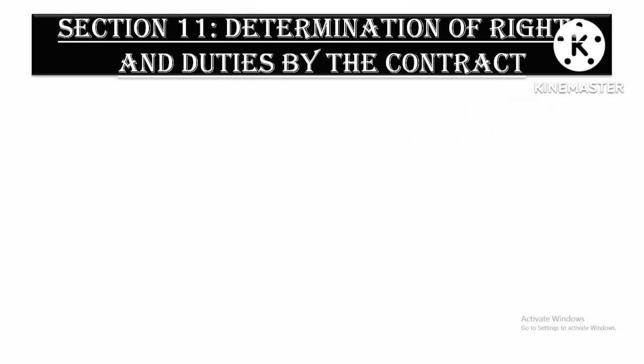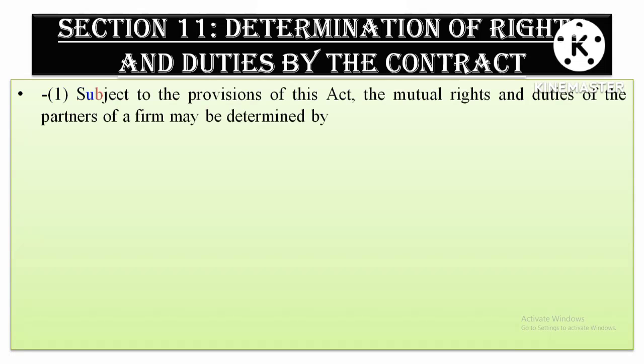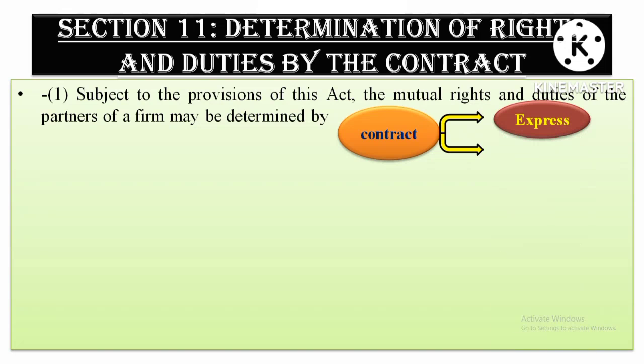Let's start with section 11. Section 11 deals with determination of rights and duties of partners by the contract. We have learned that the partnership firm is created through a contract. That's why section 11 says that the rights and duties of partners will be determined by a contract. The contract through which mutual rights and duties of partners are set out can be of two types — it can be expressed or implied.